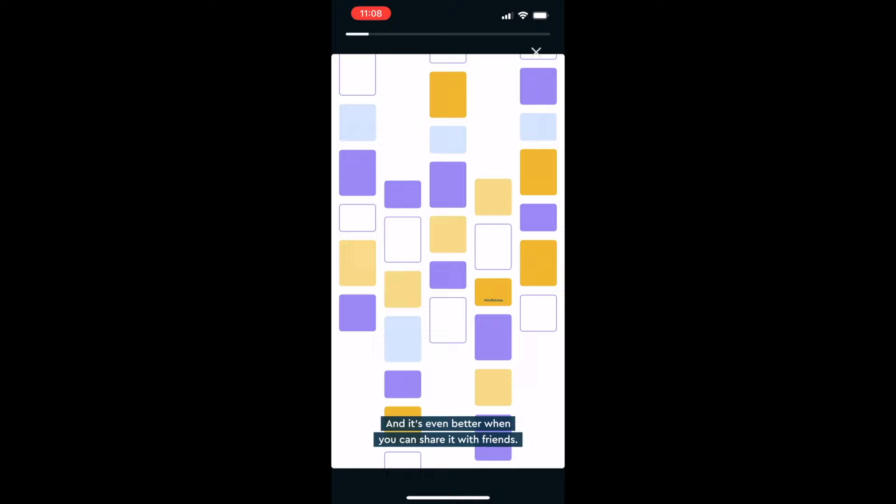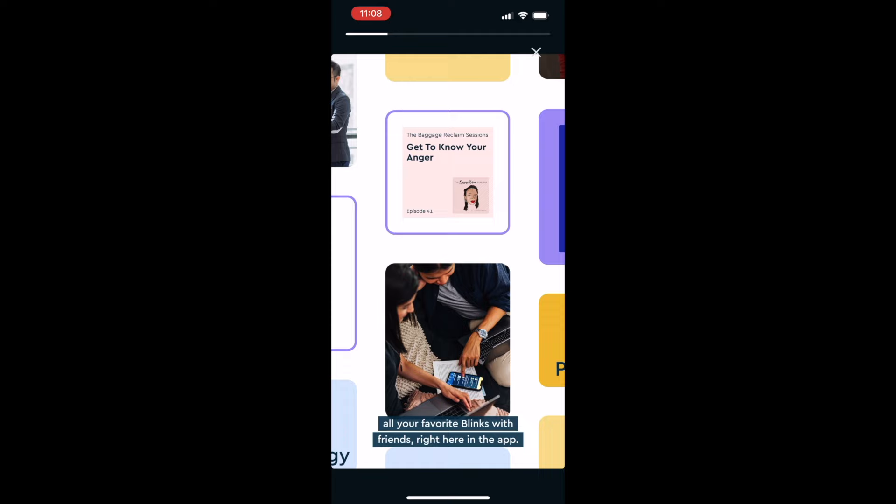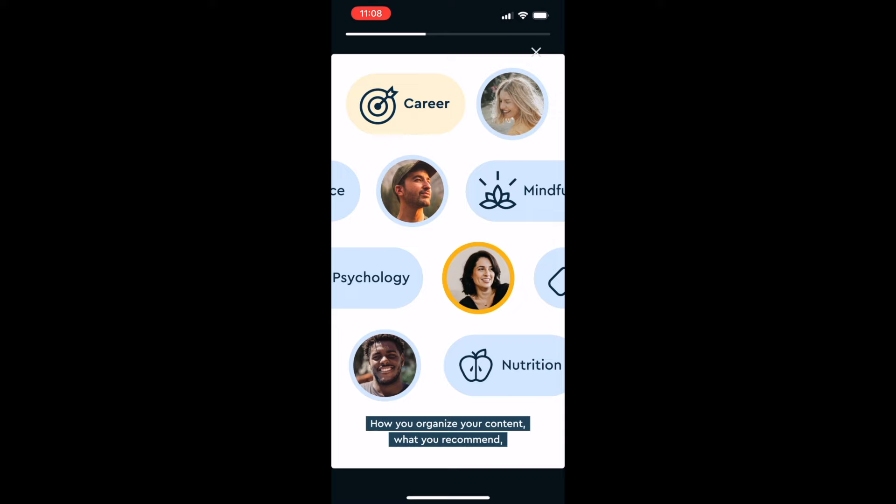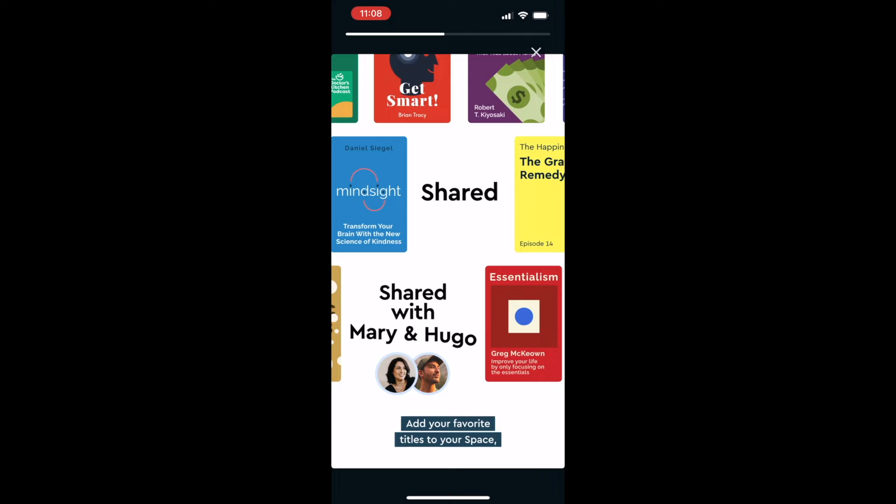And Blinkist just launched a new feature called Blinkist Spaces. It's a really cool feature that allows you to create a space with your friends or family to share and discuss your favorite titles. It's kind of like having a portable book club in your pocket, accessible anytime, anywhere. If you're as excited as I am about blending education and entertainment and getting key insights from these Blinks, then I've got some good news for you.